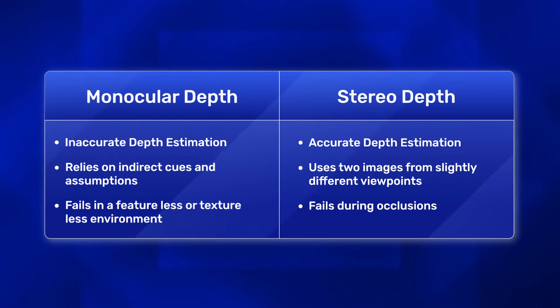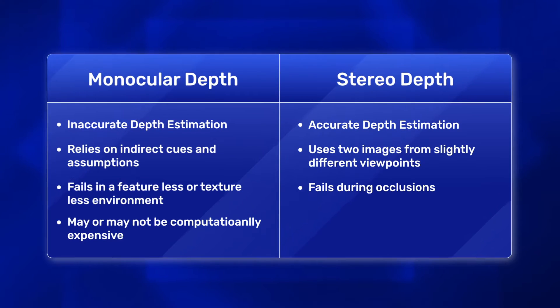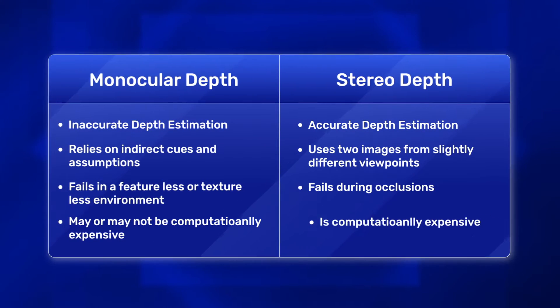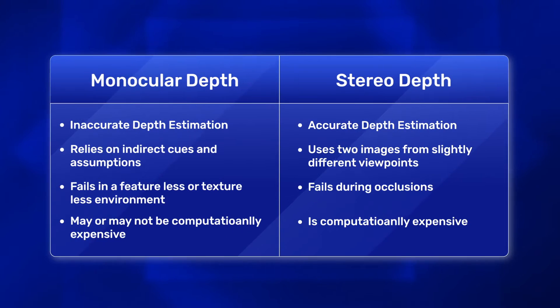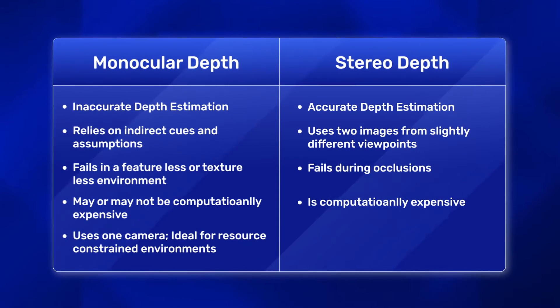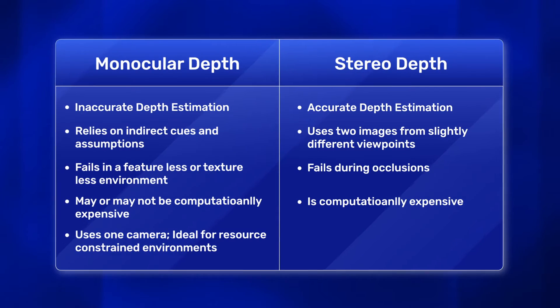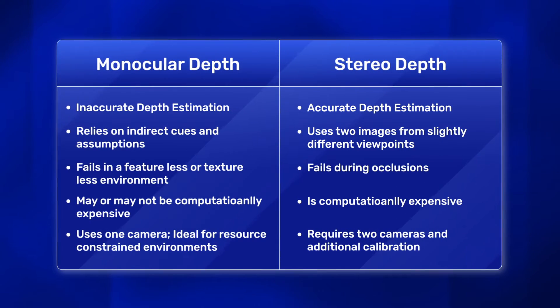Depending on the technique, monocular vision may or may not be computationally expensive, but stereo vision will be, as it matches points between two images. Hence, monocular vision is ideal for resource-constrained environments, making it cost-effective, whereas stereo vision requires two cameras and additional calibration. Monocular vision is not suitable when accurate depth information is vital; for those cases, it is recommended to employ 3D LiDAR object detection.